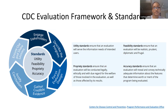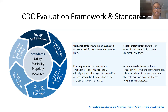There are four standards for the CDC evaluation framework. Utility standards ensure that an evaluation will serve the information needs of intended users. Propriety standards ensure that an evaluation will be conducted legally, ethically, and with due regard for the welfare of those involved. Feasibility standards ensure an evaluation will be realistic, prudent, diplomatic, and frugal. Accuracy standards ensure an evaluation will reveal and convey technically adequate information about the features that determine worth or merit of the program being evaluated.